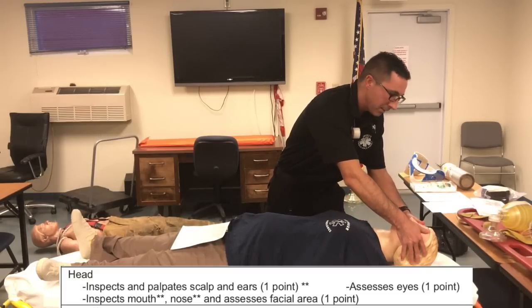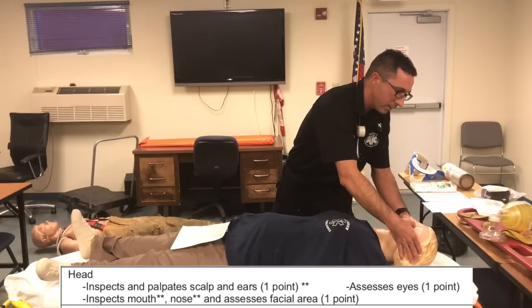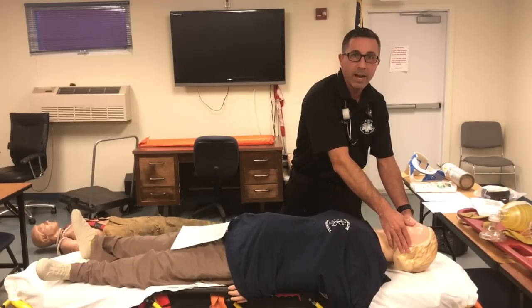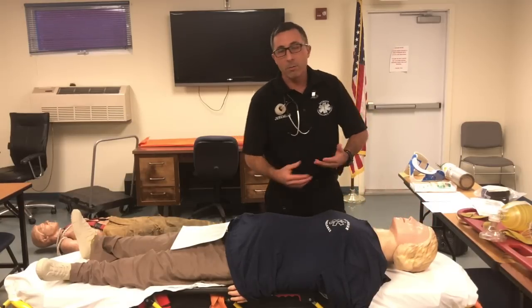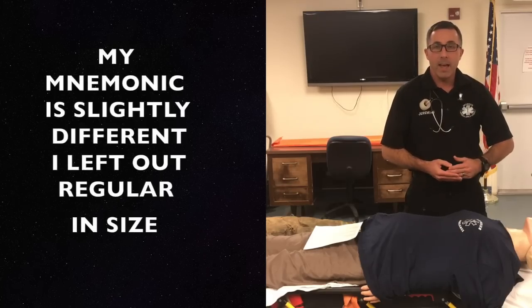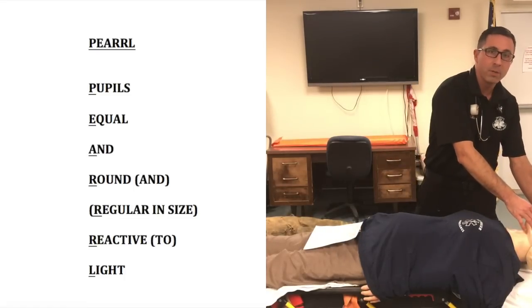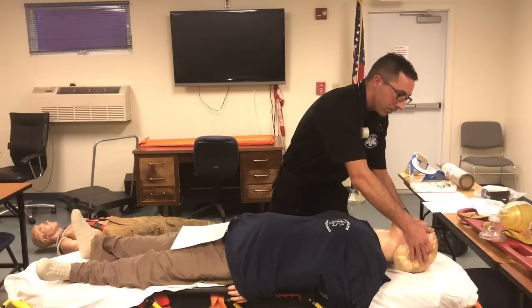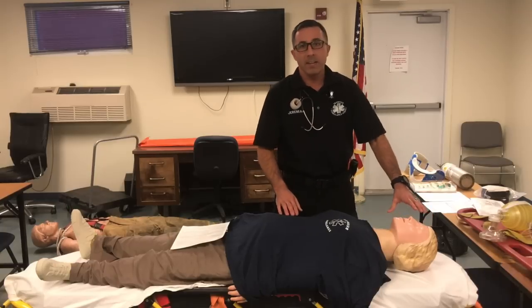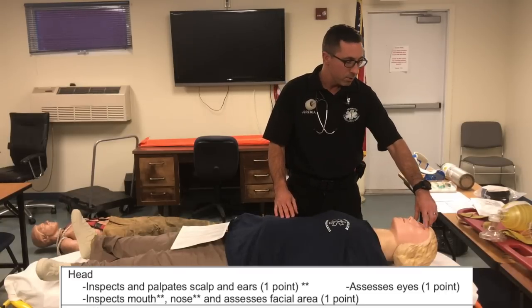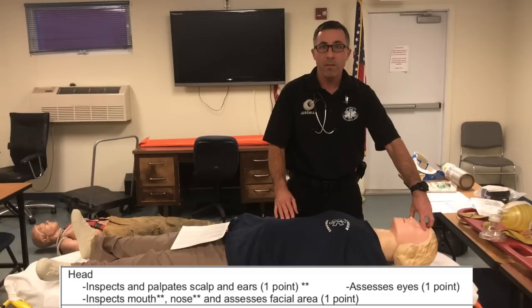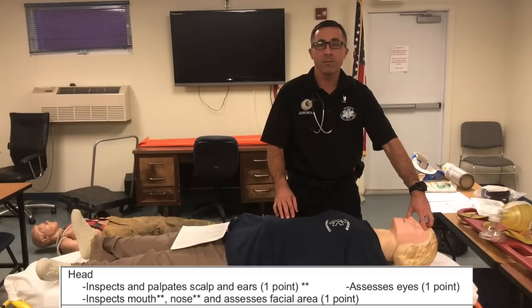Next, assess the eyes. Check that the pupils are equal, round, and reactive to light — the acronym is PERRL. Use your penlight for that. Also look for any bruising around the eyes, which we call raccoon eyes. That can indicate a serious head injury. Bruising is a late sign, but we still want to check.